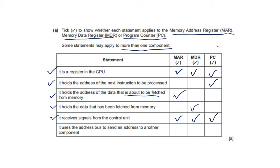The last option: it uses the address bus to send an address to another component — MAR and PC use the address bus, while MDR uses the data bus.